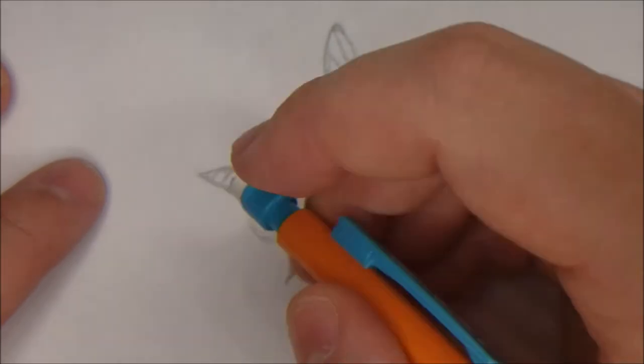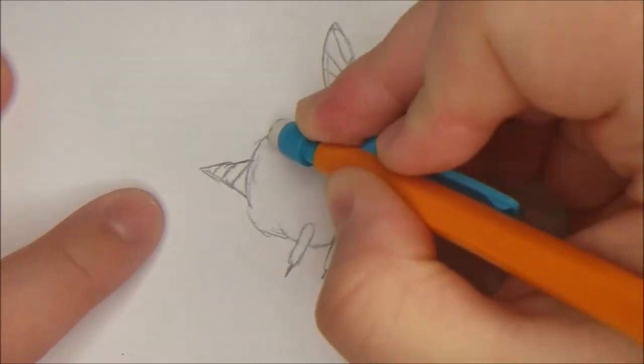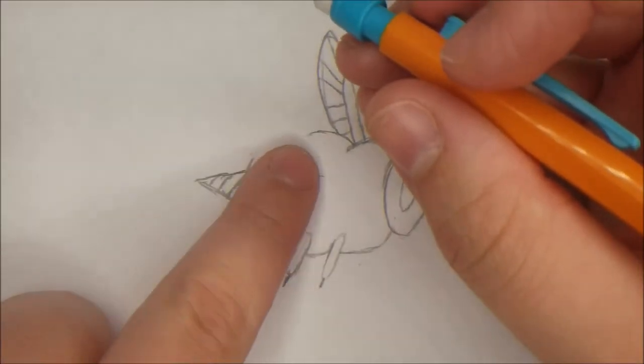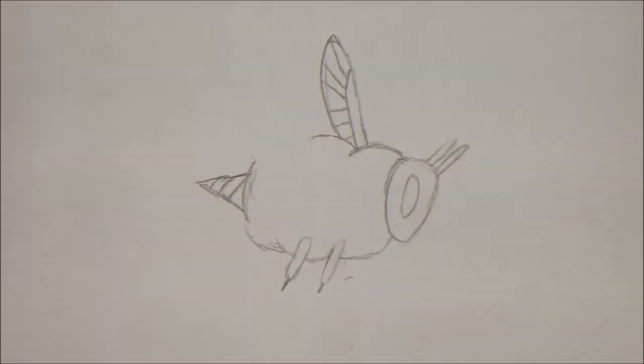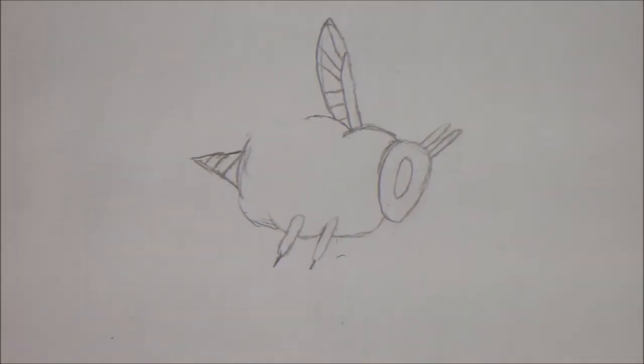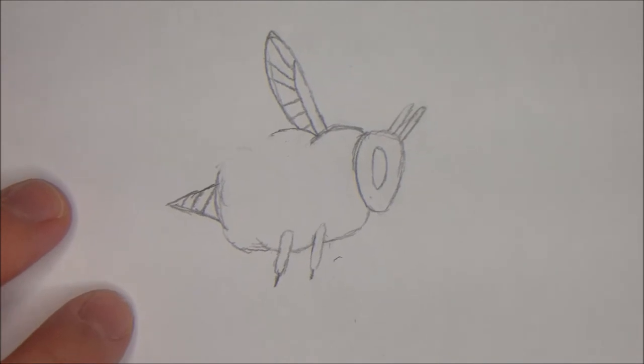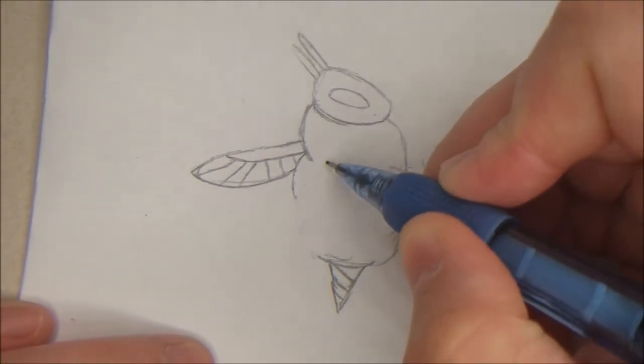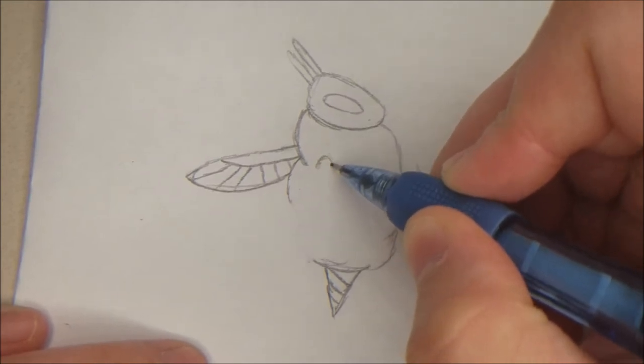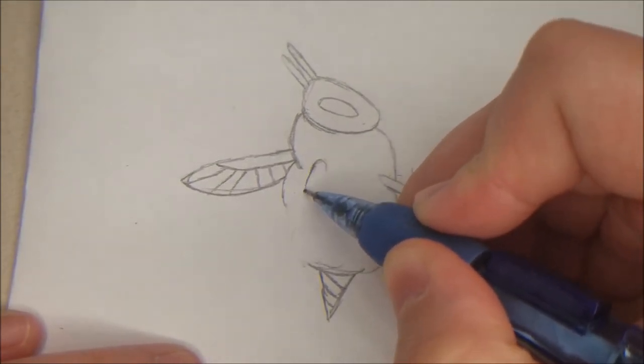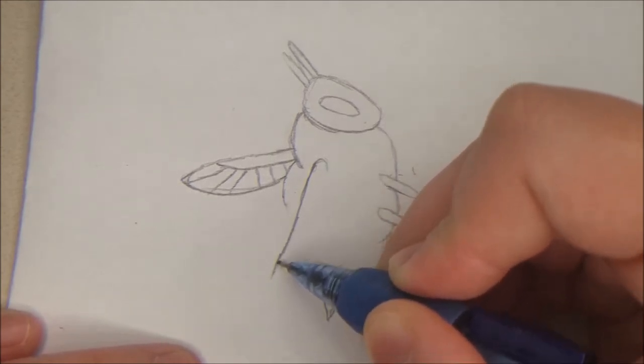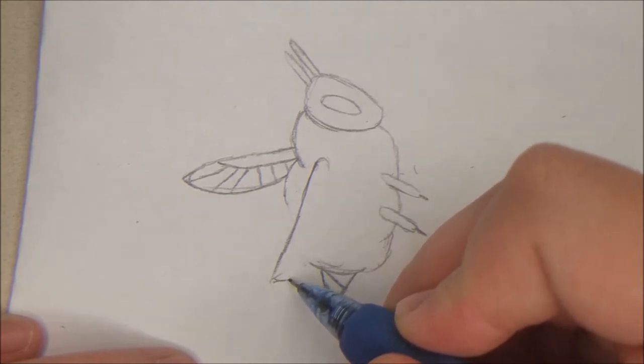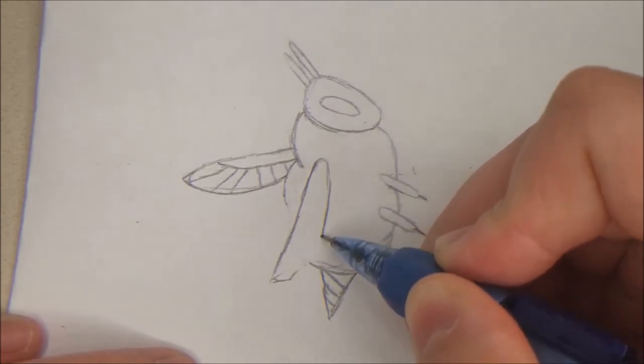And now, you have one wing done. We will be taking our eraser. And we'll be erasing this little bit right here. Because the wing is on this side of him. So, it's going to be just a little bit different. We're going to turn him sideways. And about here. We're going to start his wing. So, we're going to bring it out. And then, we're going to swoop it.